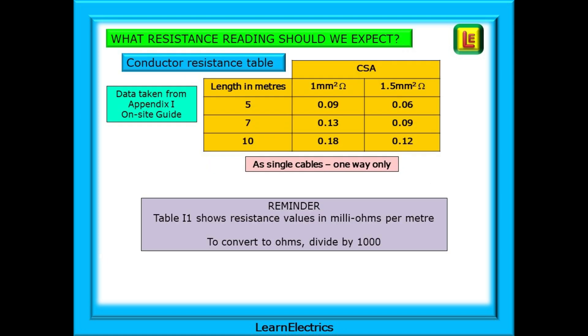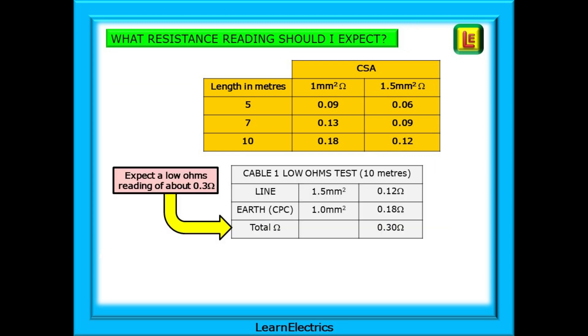If we use the conductor resistance table that we created earlier we can work this out. Make sure that you've converted the readings from milliohms to ohms. Here are the values that we should expect: 10 meters of 1.5 millimeter cable is 0.12 ohms and 10 meters of 1 millimeter cable is 0.18 ohms. Thinner cable, higher resistance. The total for the two is 0.3 ohms.